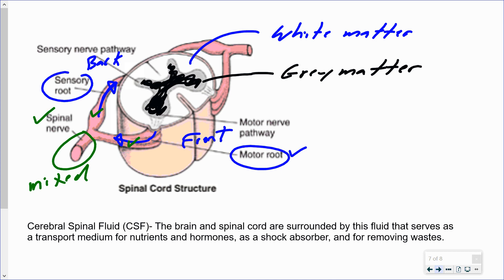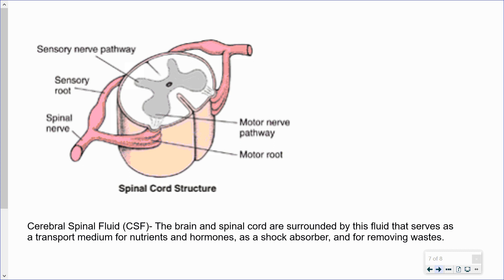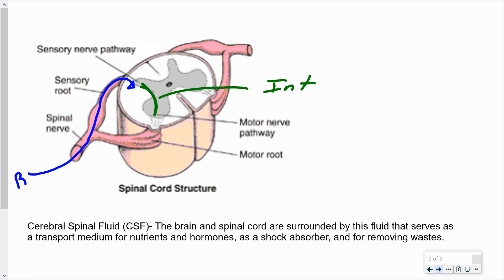If we are talking about reflexes, they typically involve only the spinal cord, not the brain. A sensory receptor detects some stimulus that could harm the body. That information travels in through the mixed nerve, separates, and comes in through the sensory root. In the spinal cord, the interneuron does rudimentary processing and makes a connection with the motor neuron. That information then goes back out through the motor root, through the mixed nerve, and down to the effector — typically a muscle — to elicit a response.